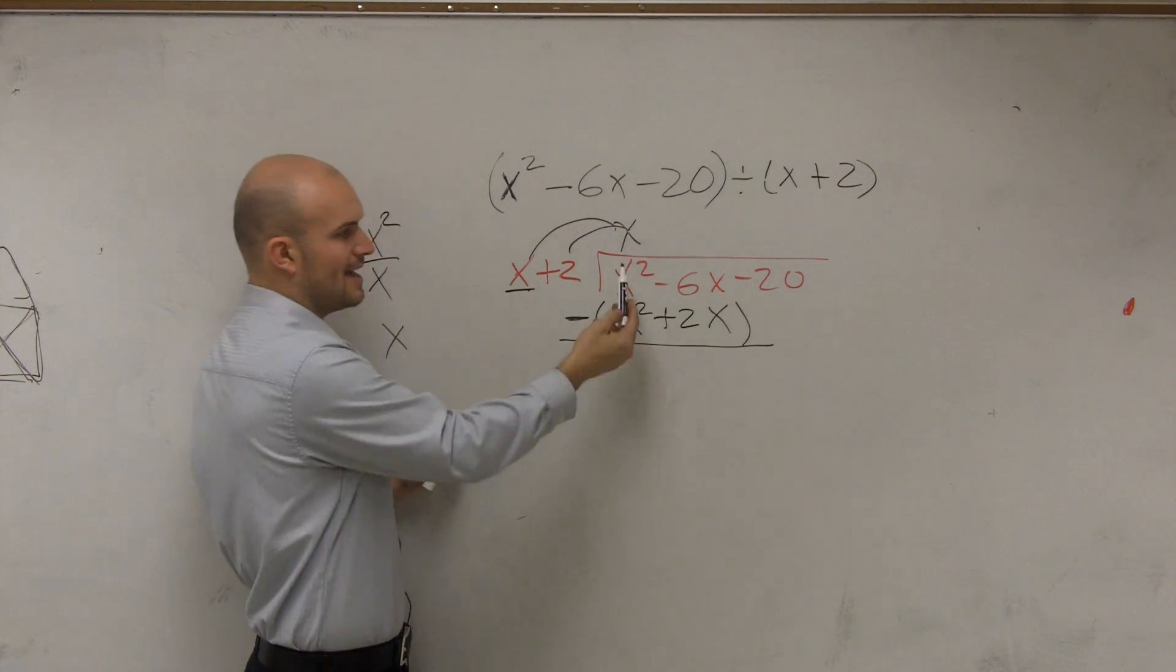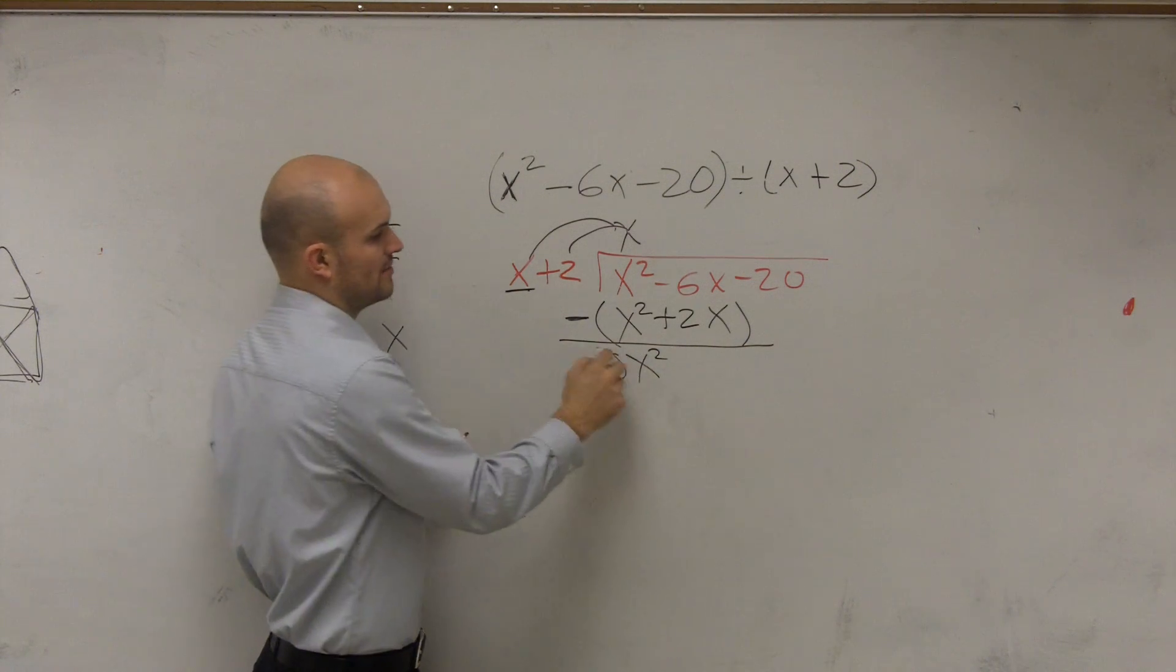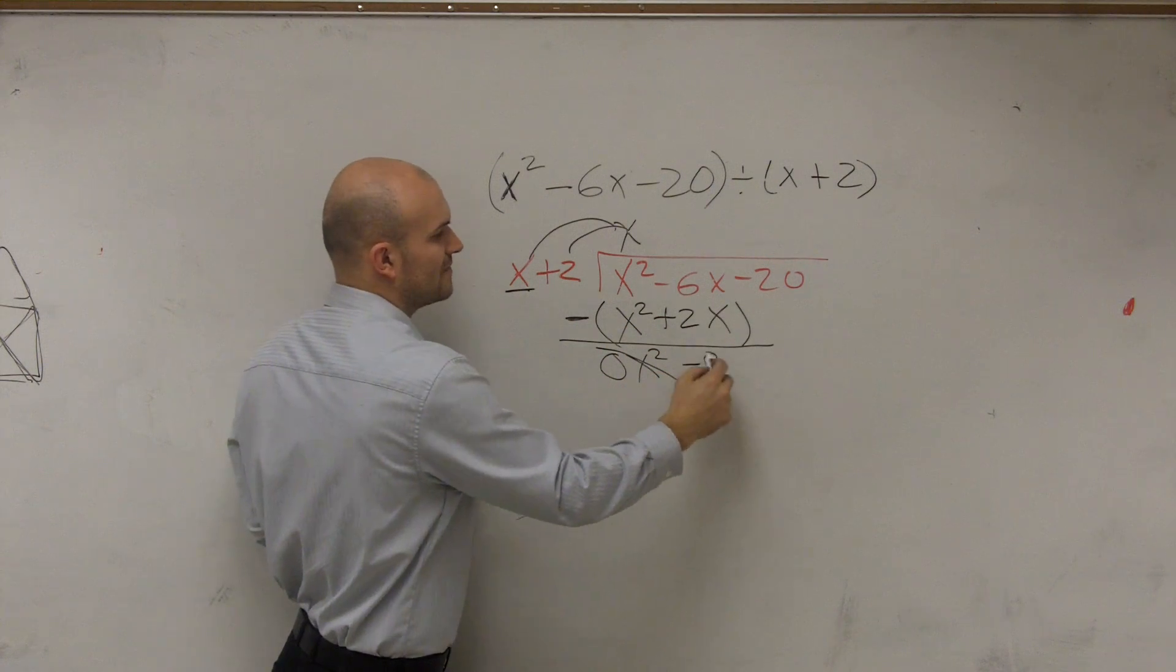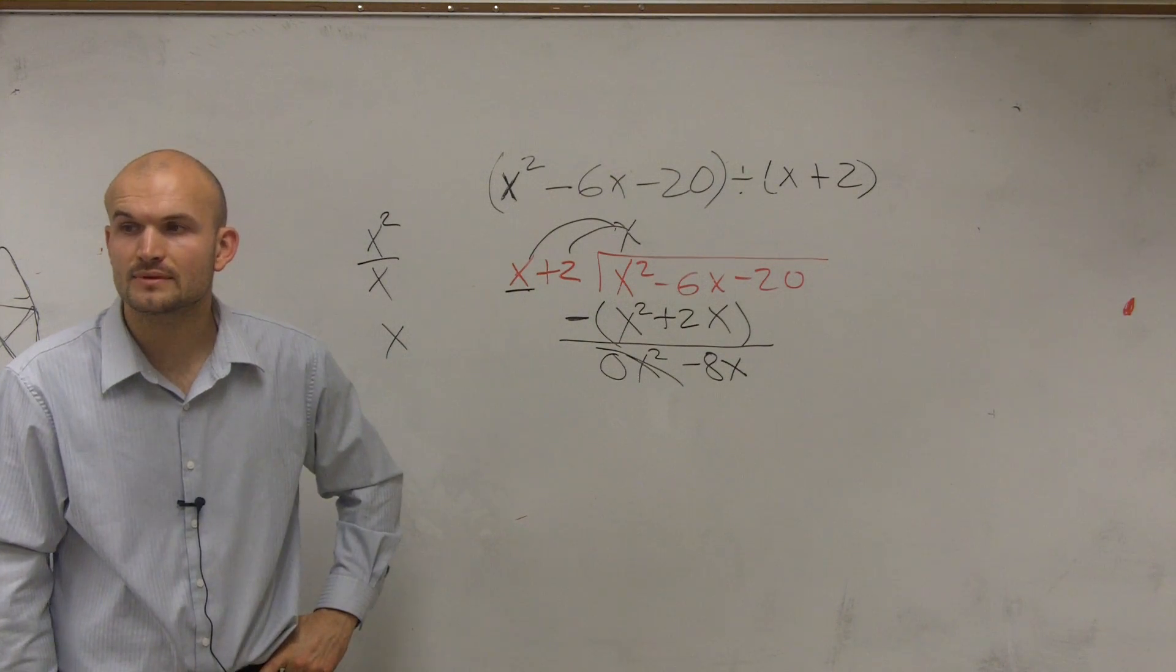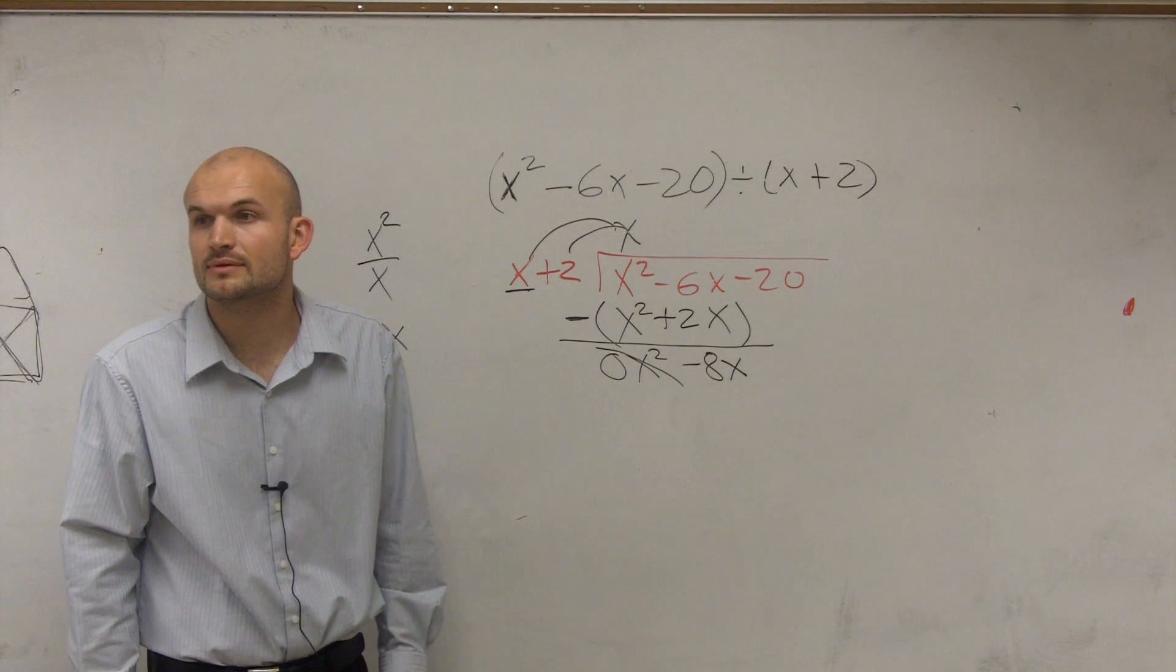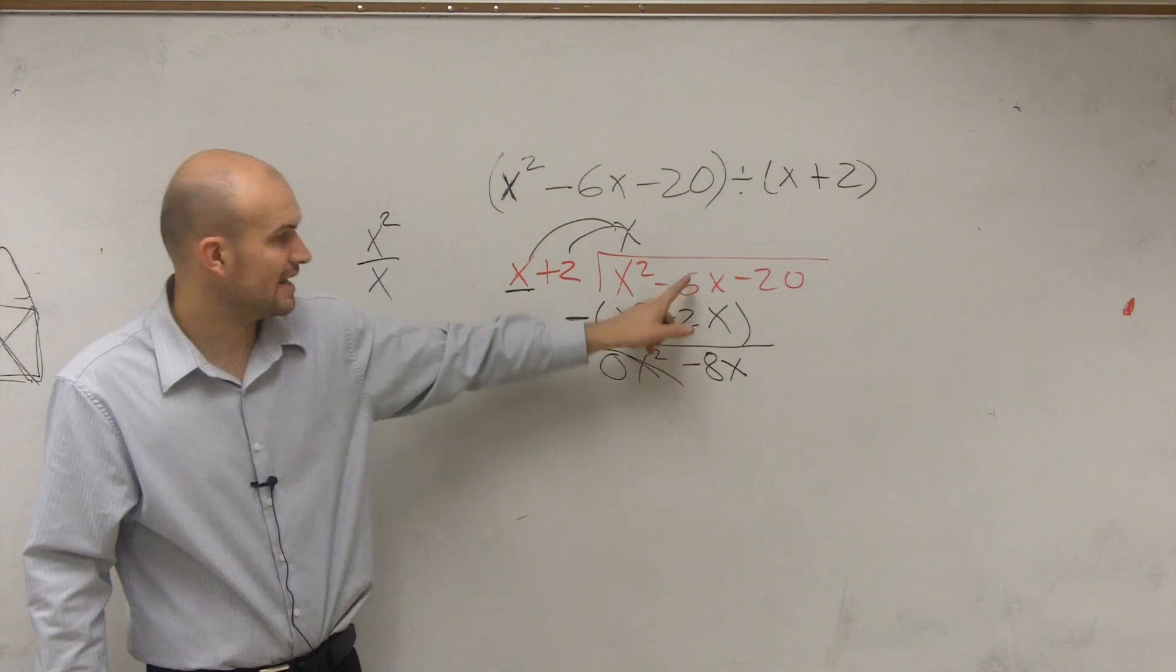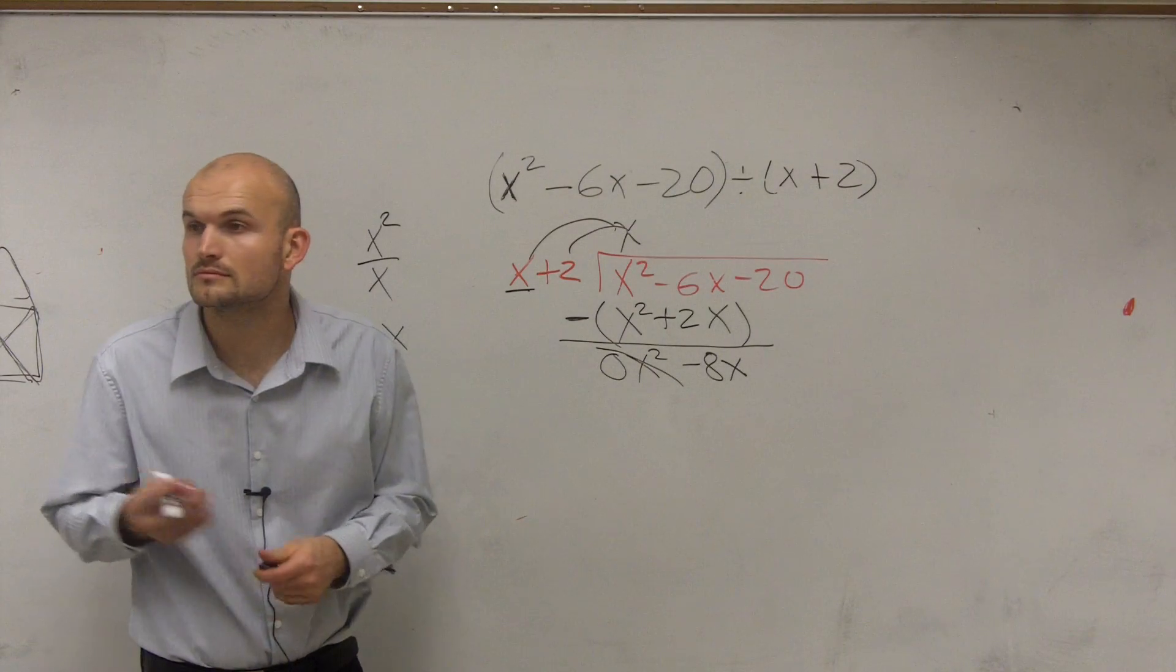I like to say it out loud. x squared minus x squared is 0x squared. 0 times x squared we know is 0, so we just kind of eliminate it. Negative 6x minus 2x is going to be a negative 8x. Does everybody follow me with what I did right there? Negative 6 minus 2 is going to be negative 8, or negative 6x minus 2x is going to be negative 8x.